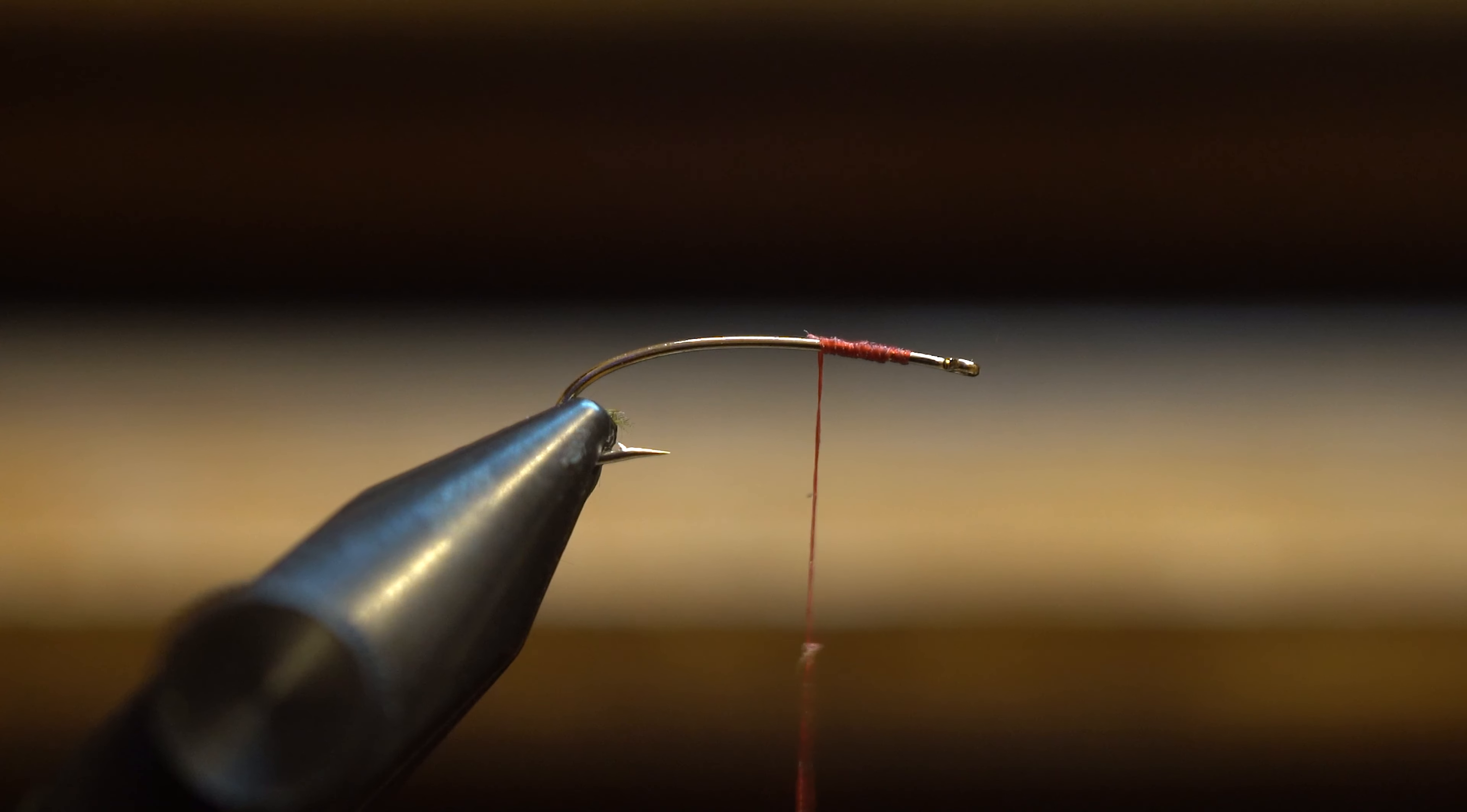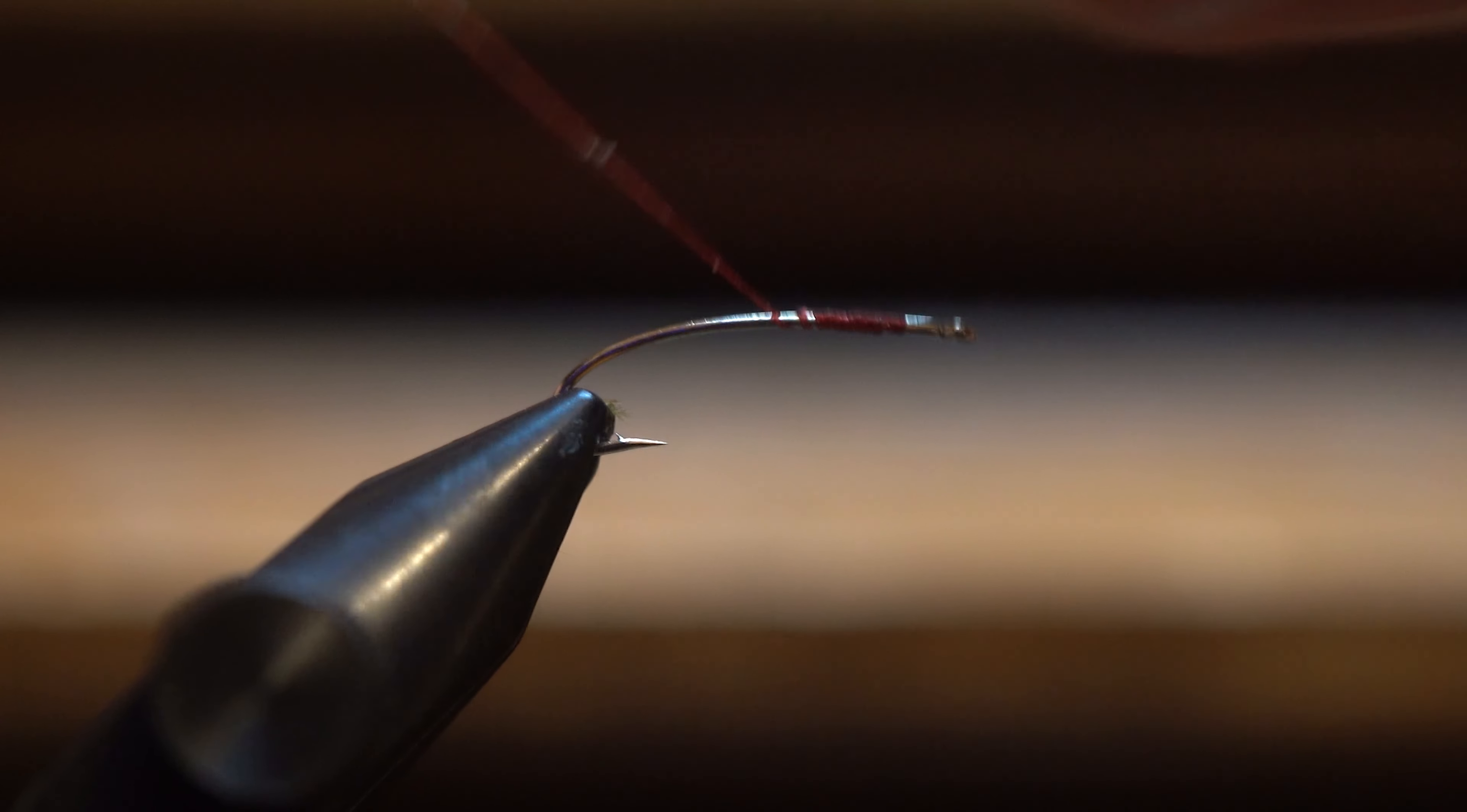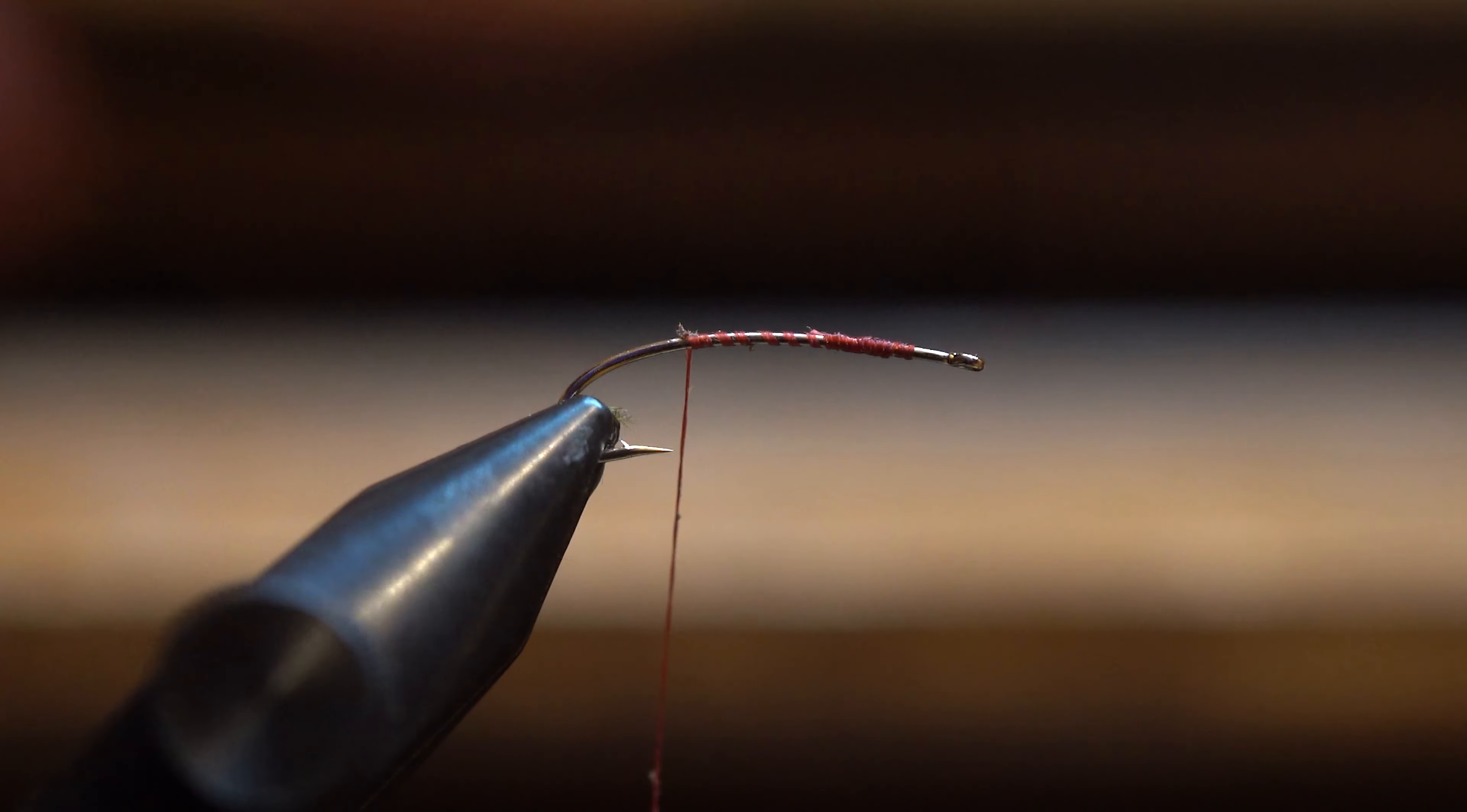Hello, Fly Tiers. Welcome to another episode of Aaron at the Fly Desk. Today, I'm going to show you a worm pattern. I call this the Power Worm. It's patterned after a traditional San Juan worm, but I can tell you it's better and catches more fish.